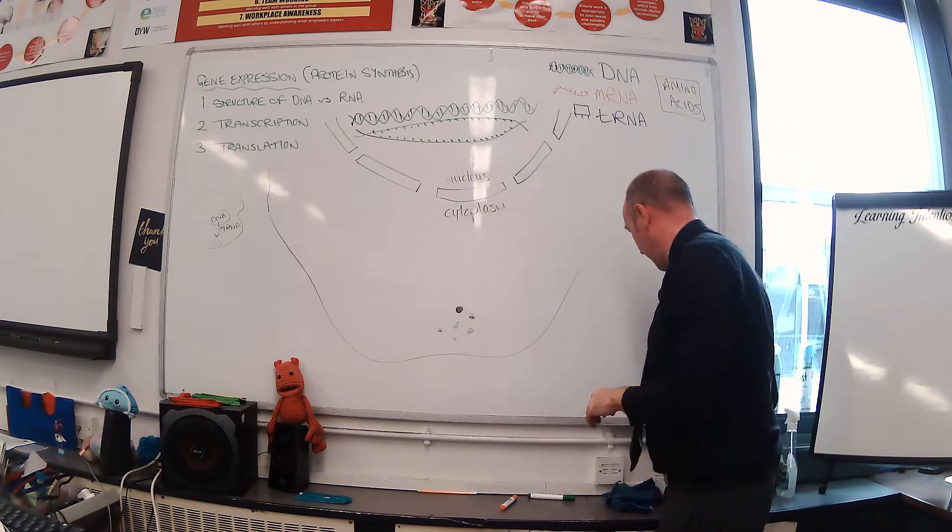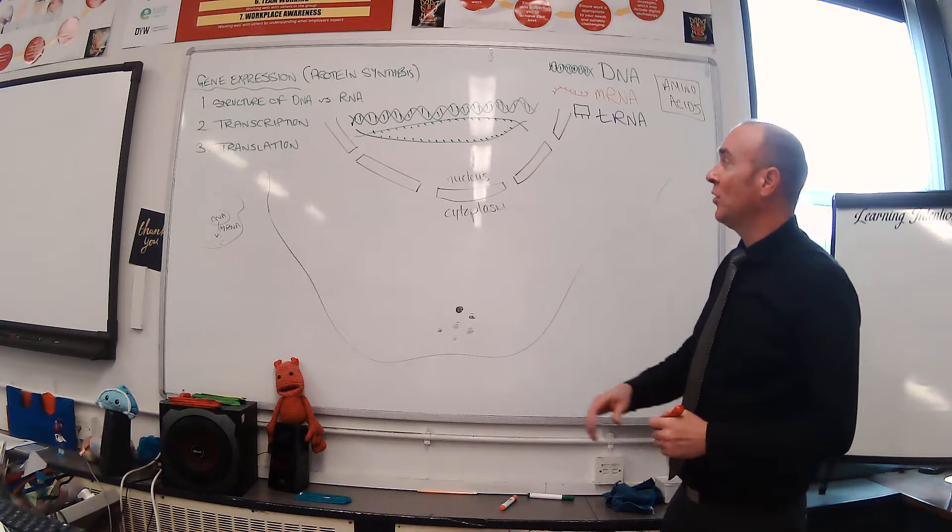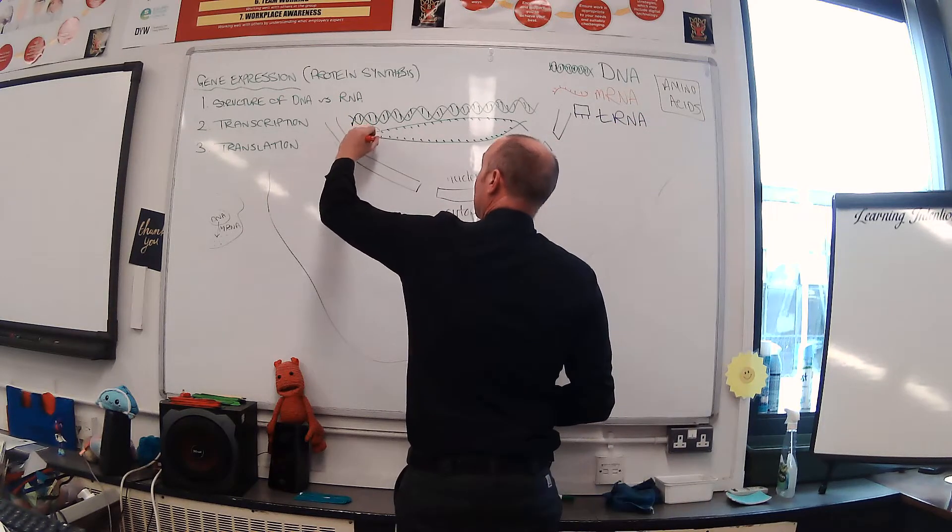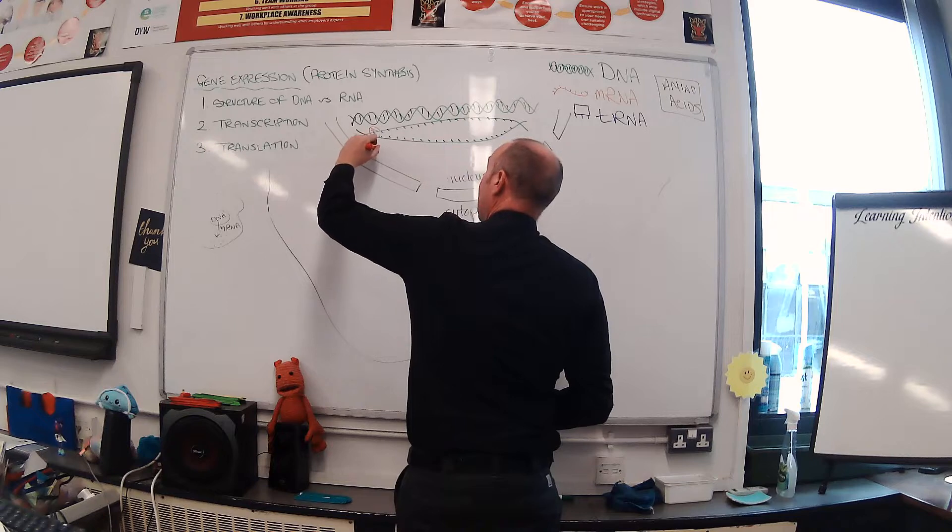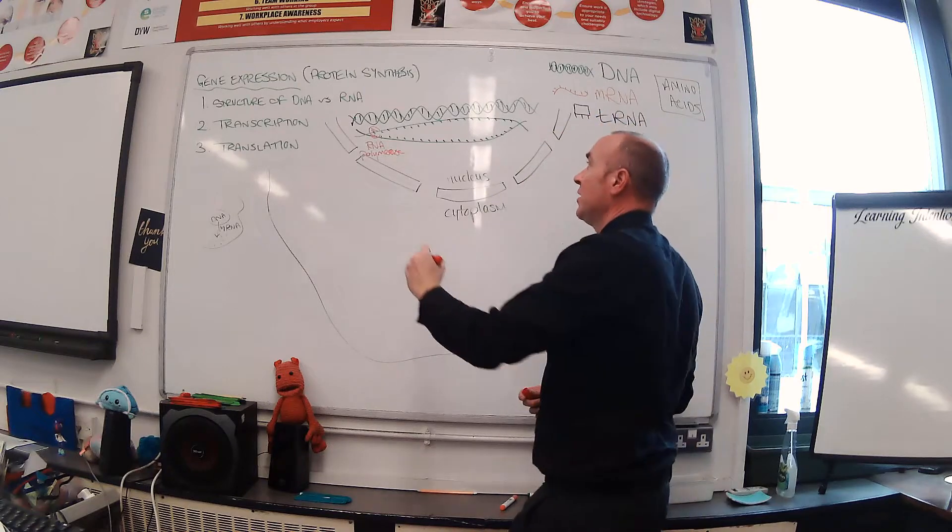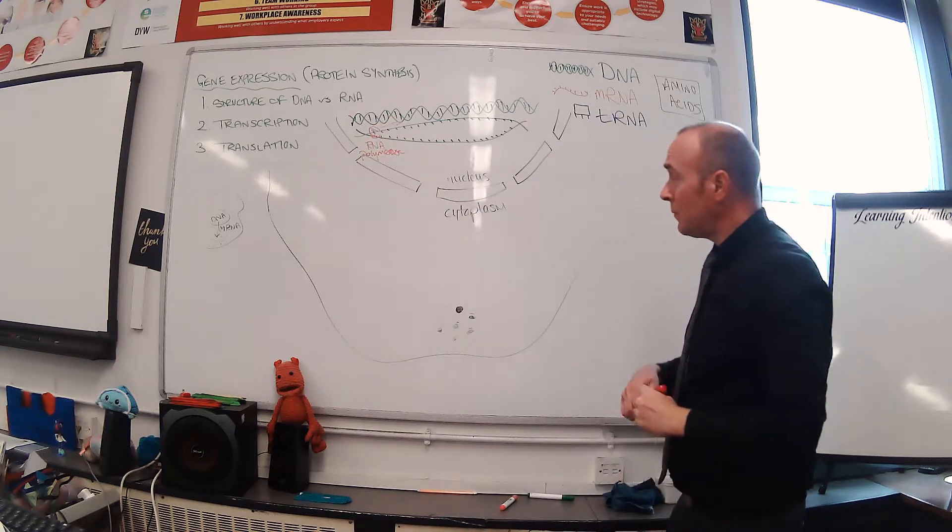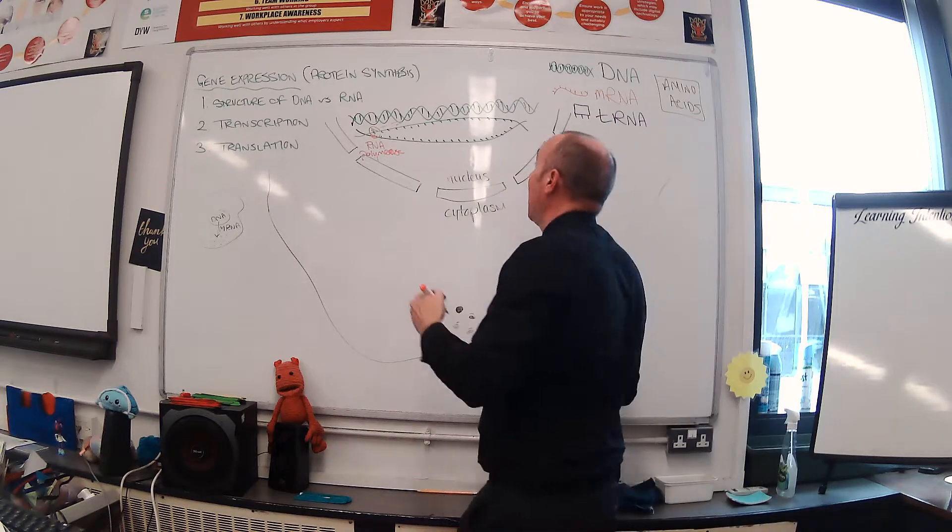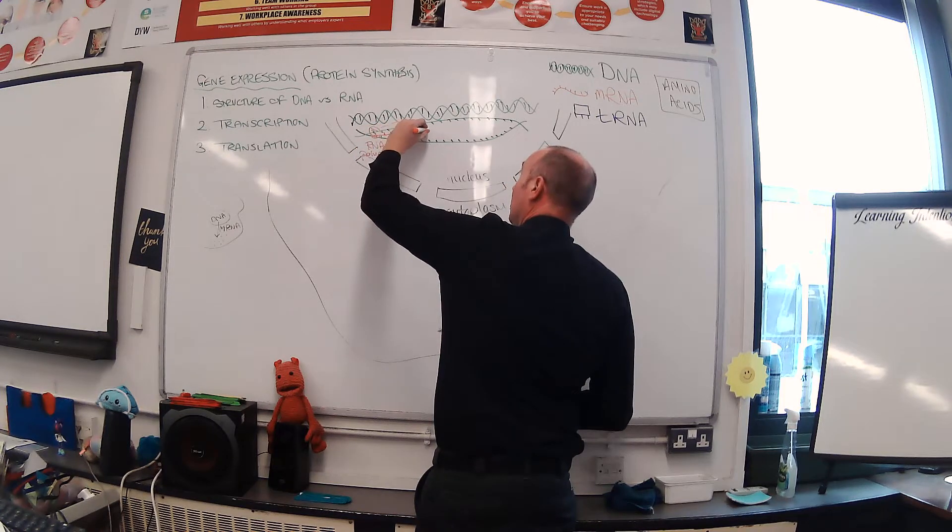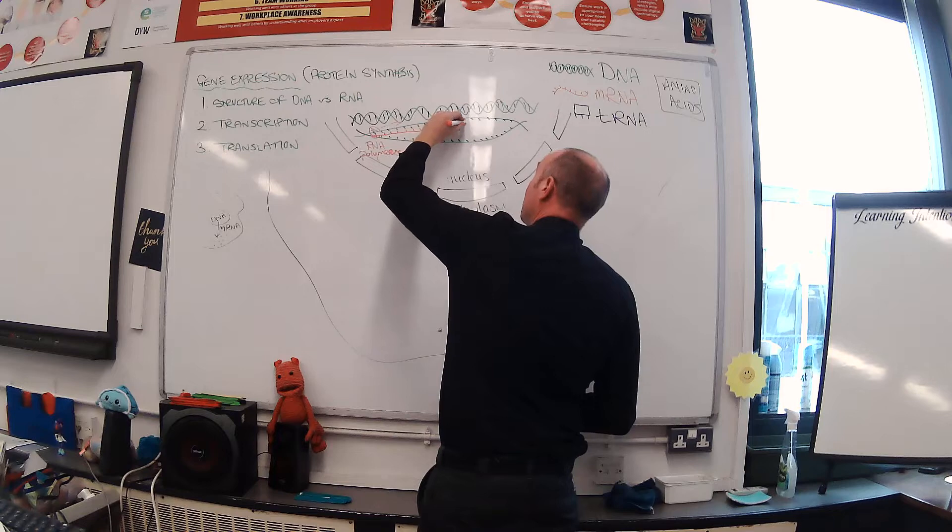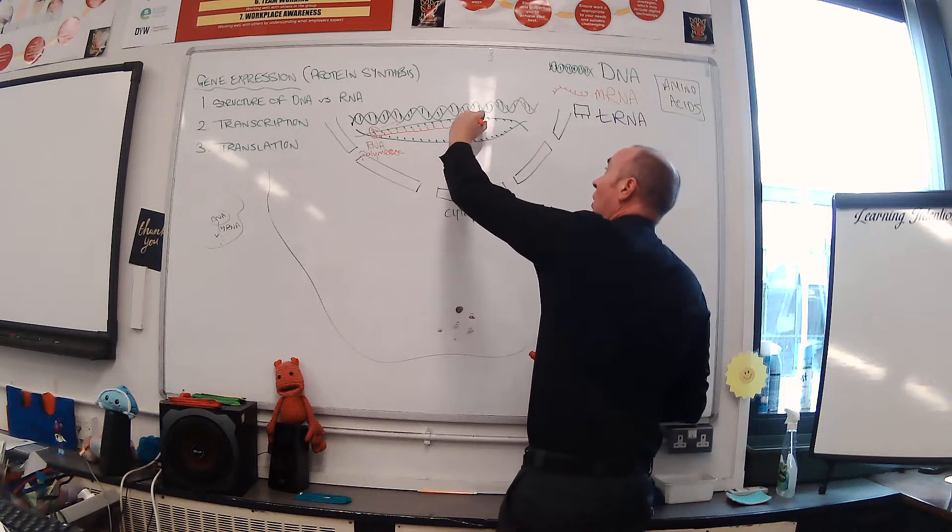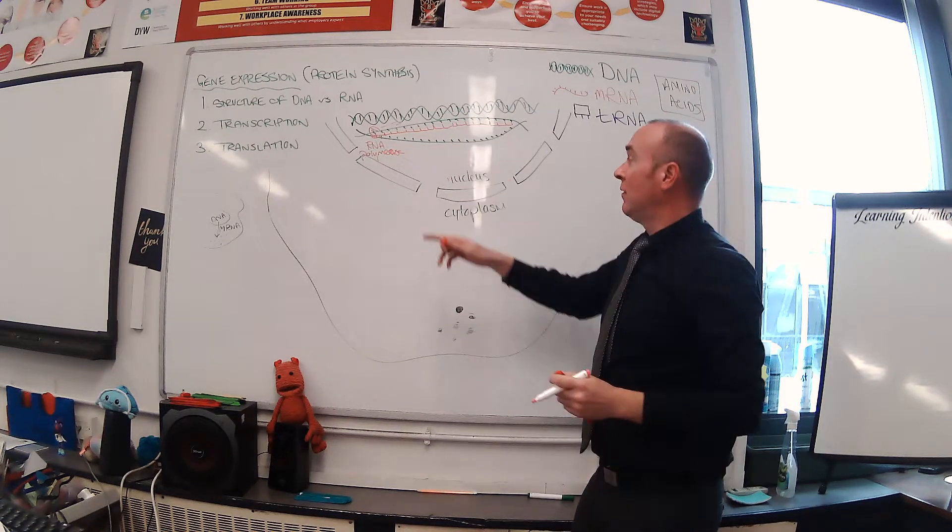It opens up and exposes a series of bases all along the gene, and in doing so it allows for mRNA to be formed. In order for a strand of mRNA to be formed, you'll need an enzyme called RNA polymerase. RNA polymerase will make its way along the gene and as it does that, it will encourage RNA nucleotides to join to their complementary base by forming hydrogen bonds between them.